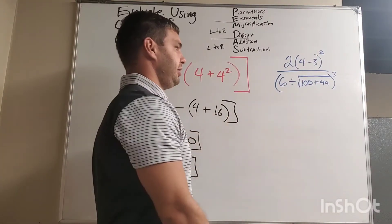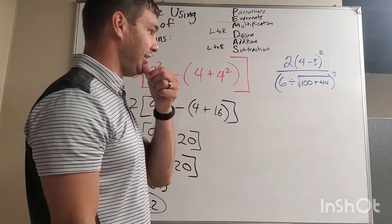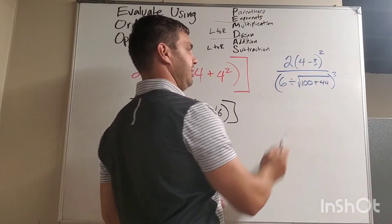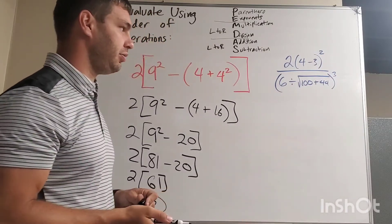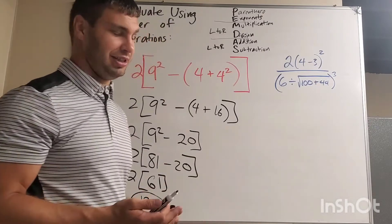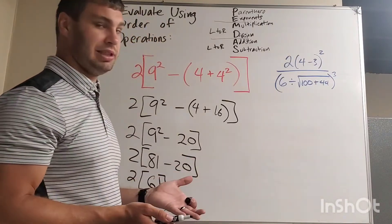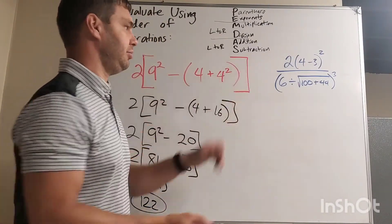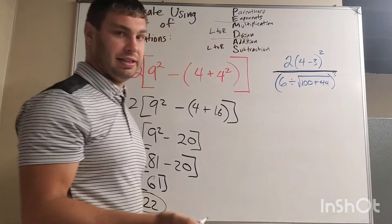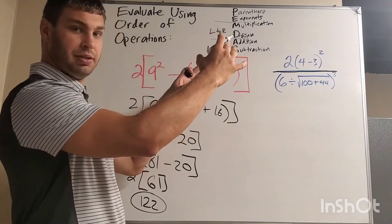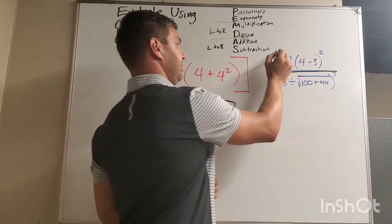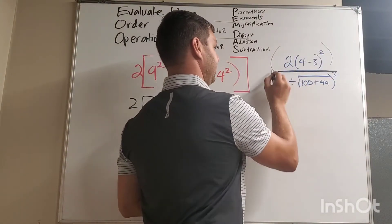Let's try the blue one. The blue one over here says 2 times the quantity 4 minus 3 squared divided by, all divided by, 6 divided by the square root of 100 plus 44, all raised to the third power. Okay, a lot going on here. Now, I wanted to do this one specifically because when you have a big fraction bar like this, what this is really telling us is that we have to do the whole top, the whole bottom, and then we can divide it. It's almost like they're in their own set of invisible parentheses.